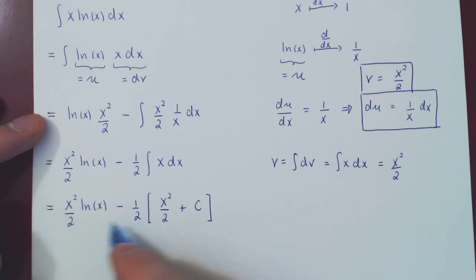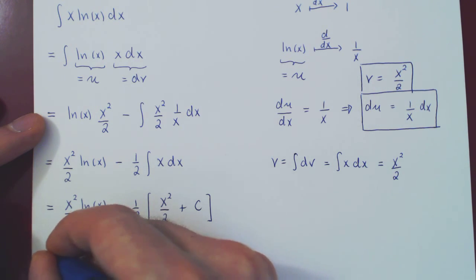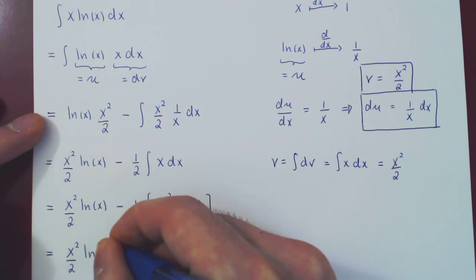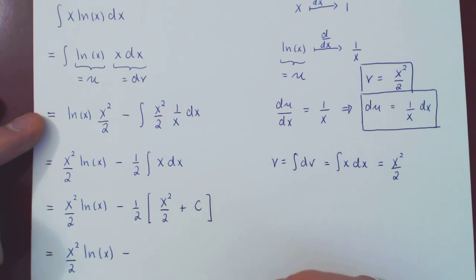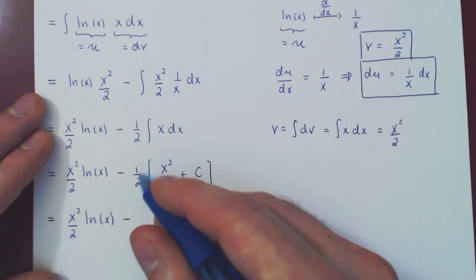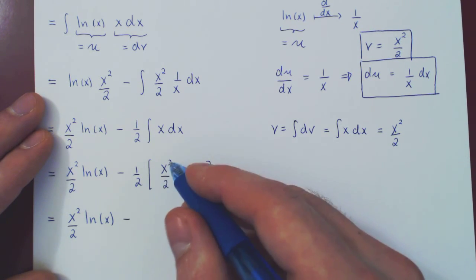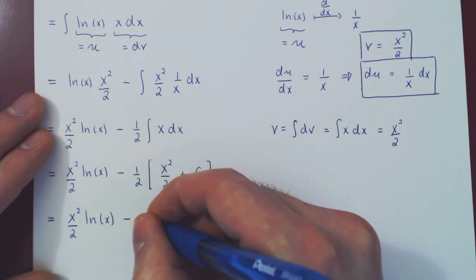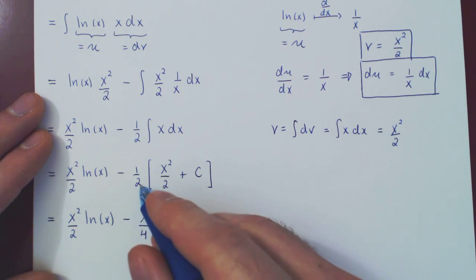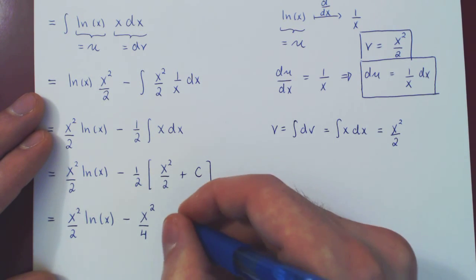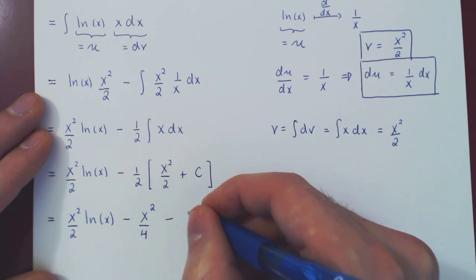So x squared over 2 ln of x, minus, well, a half times a half is a quarter, so minus x squared over 4. And now we have minus 1 half times c, or if you prefer, minus c over 2.